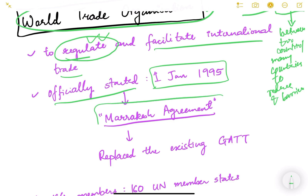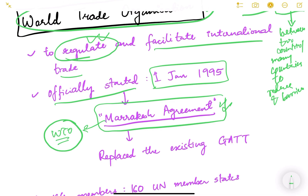WTO started as an outcome of the Marrakesh Agreement. If this word comes in an exam, WTO should immediately come to mind — prelims questions often ask which organization relates to the Marrakesh Agreement, with options like WTO, IMF, World Bank, etc. Marrakesh is a city in Morocco, an African country, and this agreement was signed there among many countries, leading to the formation of the World Trade Organization.